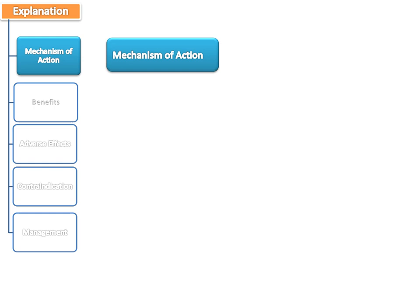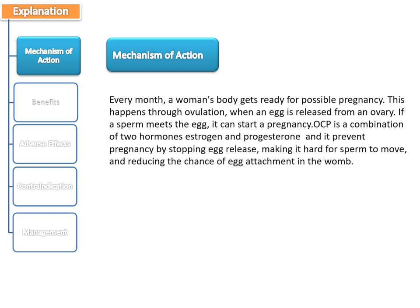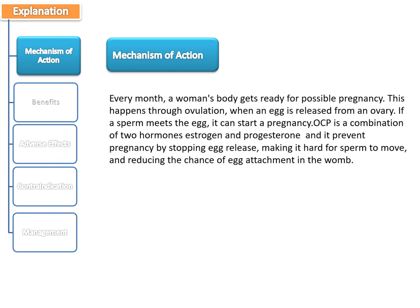The mechanism of action can be explained like this: Every month a woman's body gets ready for possible pregnancy through ovulation, when an egg is released from an ovary. If a sperm meets the egg, it can start a pregnancy. The oral contraceptive pill is a combination of two hormones, estrogen and progesterone, and it prevents pregnancy by stopping egg release, making it hard for sperm to move, and reducing the chance of egg attachment in the womb.